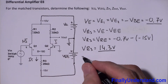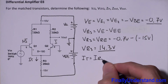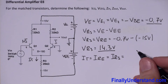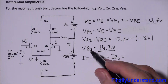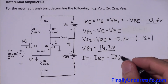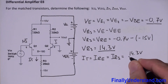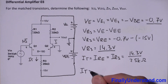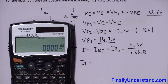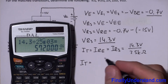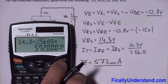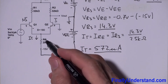Next we find the tail current IT, also called IRE or IR3. The tail current is found by dividing the voltage across R3 by the resistance of R3: 14.3 volts divided by 25 kilohms. Using the calculator: 14.3 divided by 25×10³ equals 572 microamps. This is the current flowing through resistor R3.